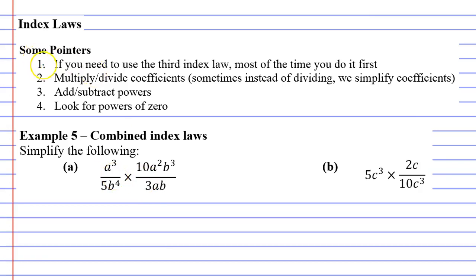Now the pointers that I've given, steps 1 to 4, are really important when you're doing combined index laws. They outline the order in which you should do things.